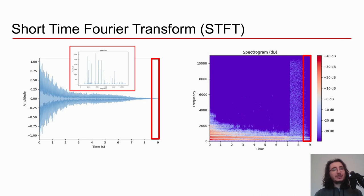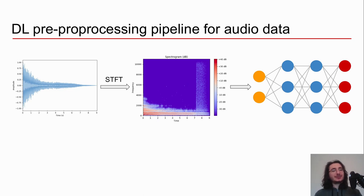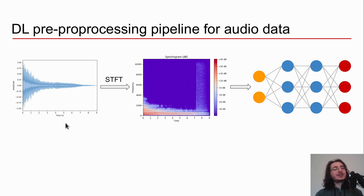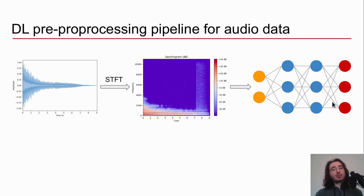Why do we need to learn about spectrograms? It turns out spectrograms are fundamental for deep learning applications on audio data. The whole pre-processing pipeline for audio deep learning is based on spectrograms. When we have a dataset, we start with a bunch of wave files — waveforms — pass them through a Short-Time Fourier Transform to get a spectrogram, and then use that spectrogram as input for our deep learning model. This is a very valuable representation for deep learning.